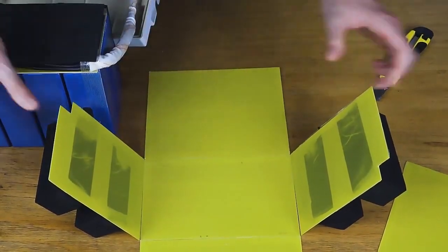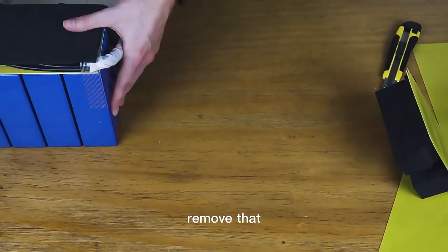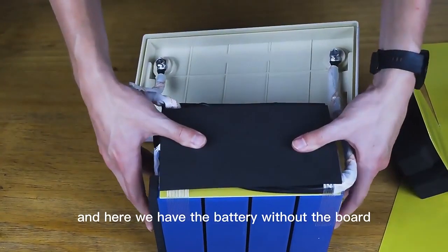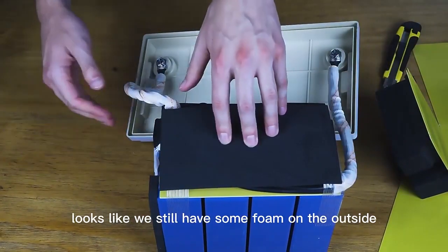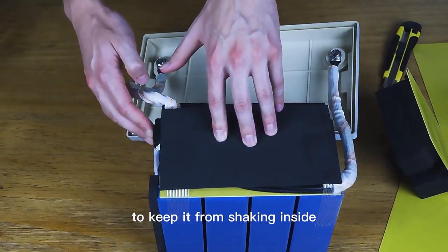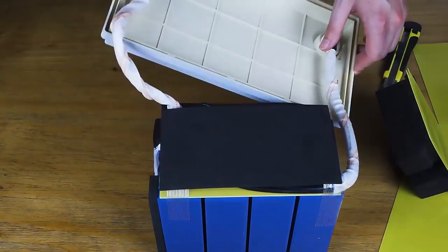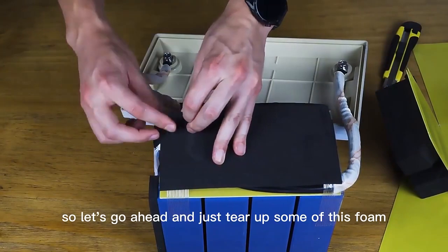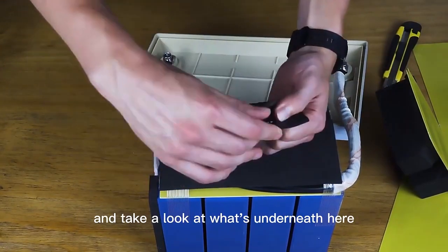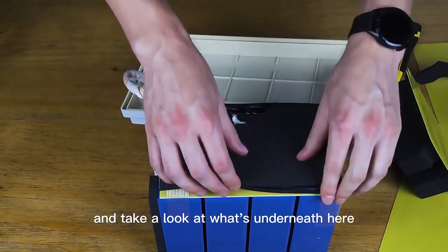So we can take this out. Remove that. And here we have the battery without the board. Looks like we still have some foam on the outside to keep it from shaking inside. So let's go ahead and just tear up some of this foam and take a look at what's underneath here.